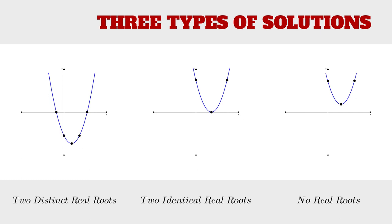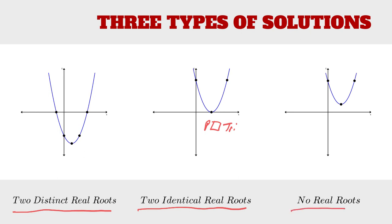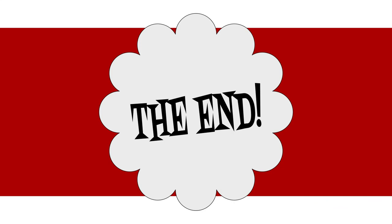To sum up: there's a case with two distinct real roots, a case with two identical real roots which is a perfect square trinomial, and a case with no real roots — where the quadratic is not factorable. Thank you for watching.